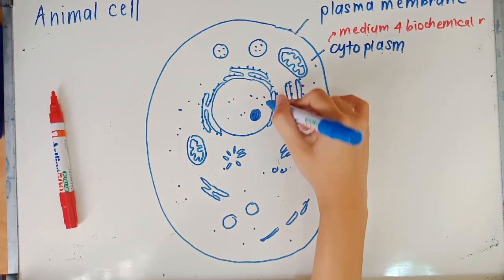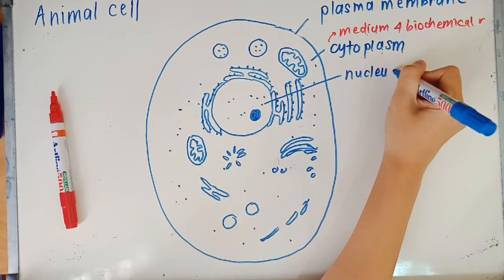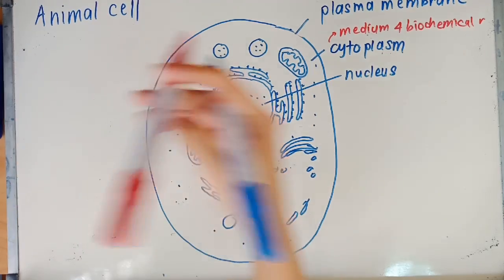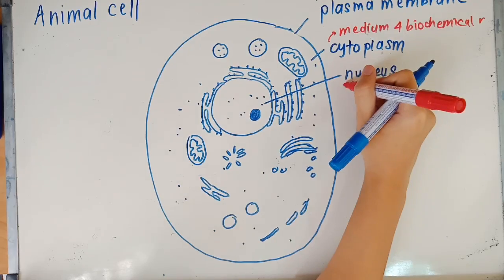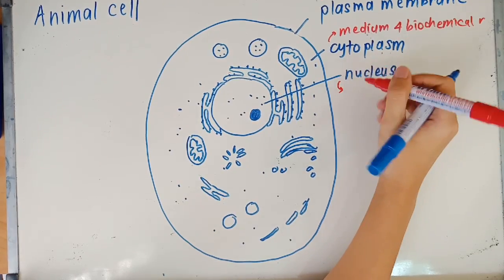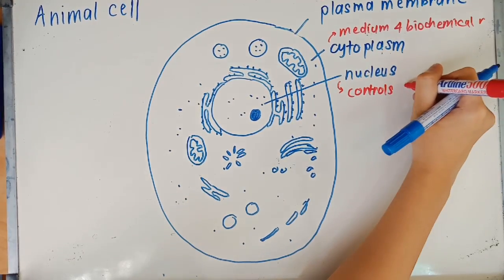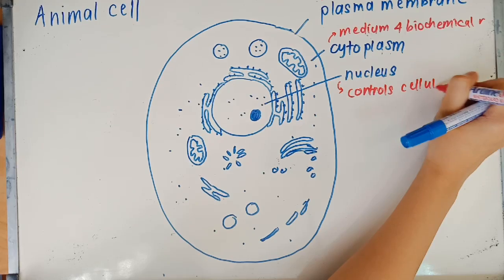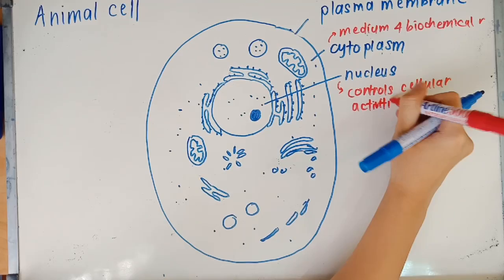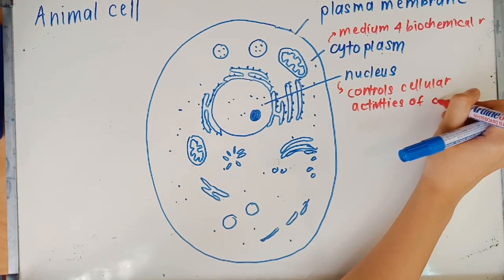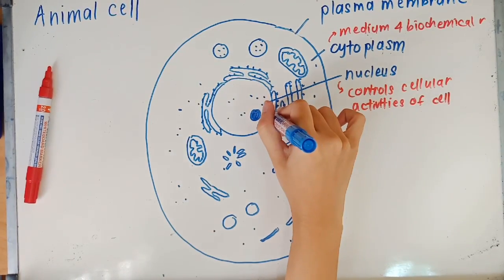Now we'll take a look at the third organelle here, which is the nucleus. The nucleus is a very important structure. In the nucleus itself there are various other structures as you would see later, but basically the function of the nucleus is to control and direct cellular synthesis and activities of the cell. It actually regulates the exchange of substances between the nucleus and the cytoplasm as well, but mainly it controls the cellular activities of the cell.